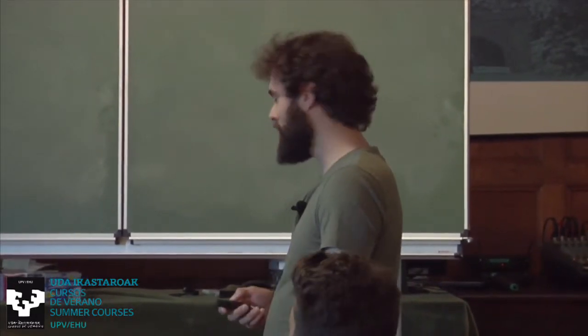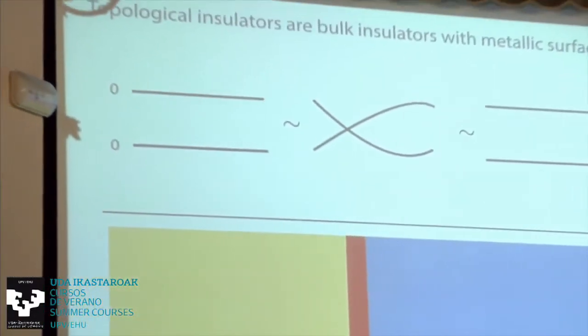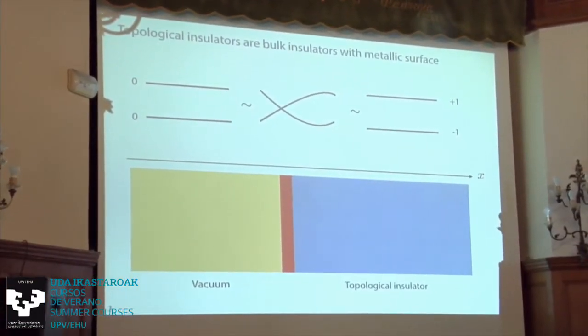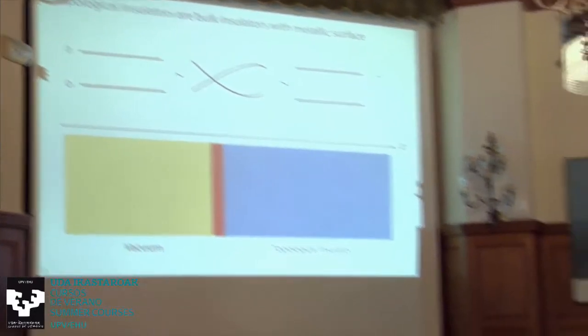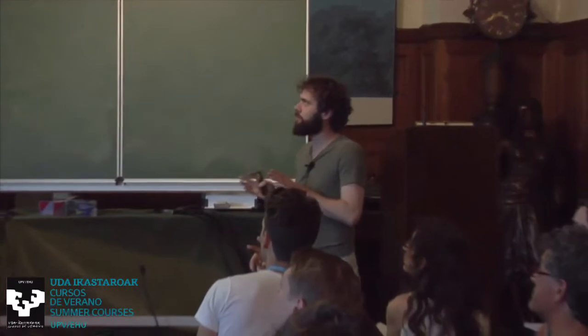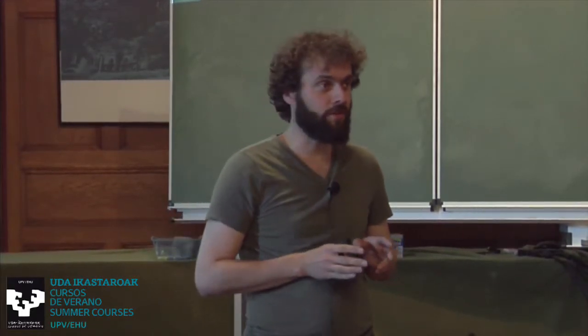Start with an intro. I was going to assume that you basically know that topological insulators are bulk insulators with metallic surfaces. Most of my talk is going to be about trying to explain what this means — a metallic surface — a little bit more carefully than just a metal.